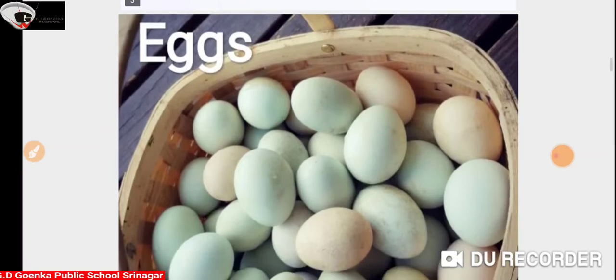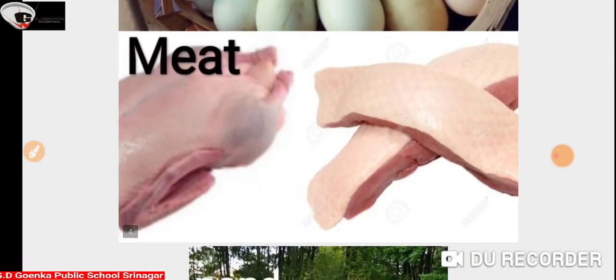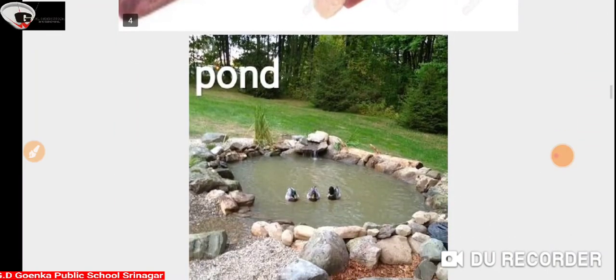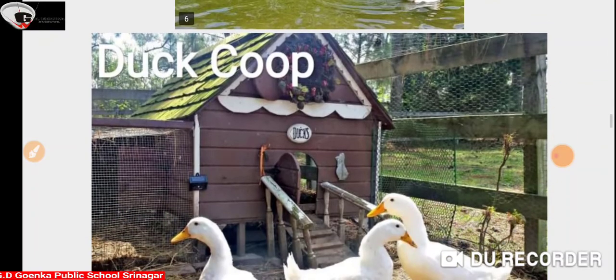Ducks give us eggs and duck meat, as you can see in the picture. Ducks live in ponds, lakes, or duck coops.